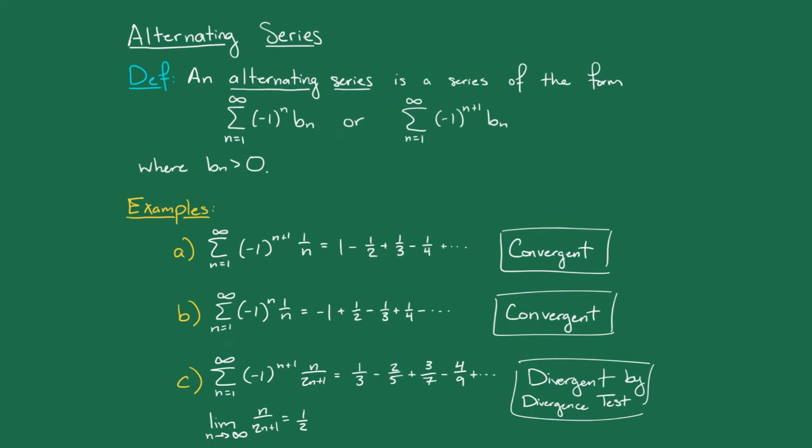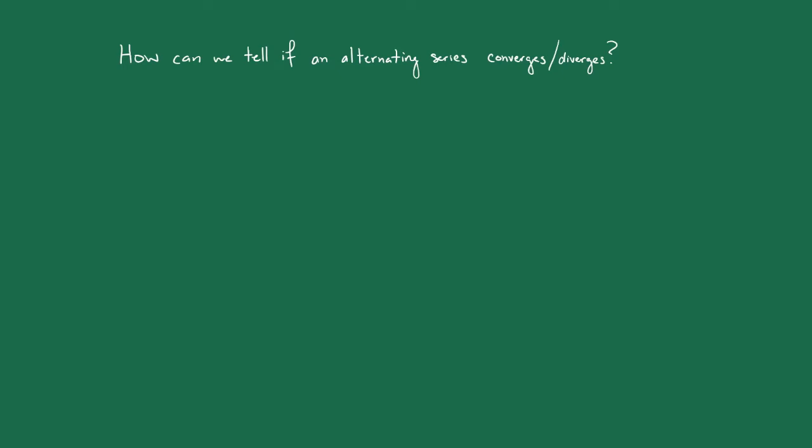So the question now becomes, how can we tell if an alternating series converges or diverges?